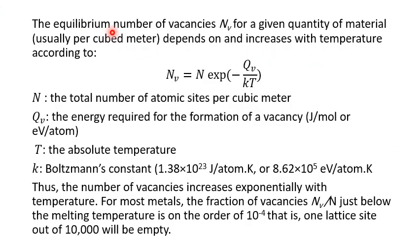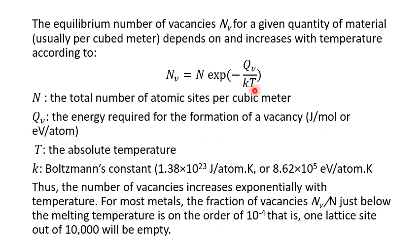The equilibrium number of vacancies, N_V, for a given volume of material — usually per cubic meter — can be determined using this equation, where N is the total number of atomic sites per cubic meter, whether occupied or empty. Q_V is the energy required for the formation of a vacancy, given in joules per mole or electron volts per atom. T is the absolute temperature, and k is Boltzmann's constant.